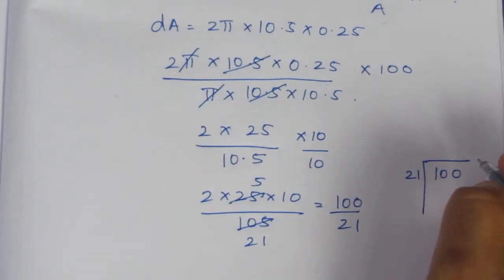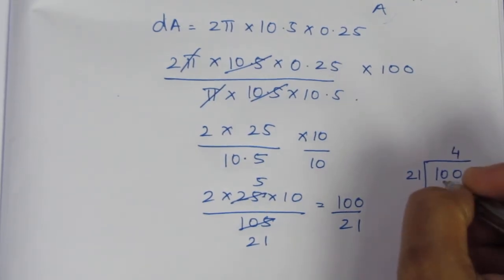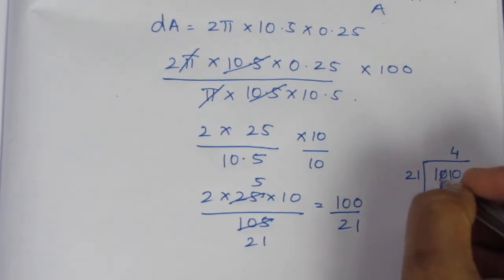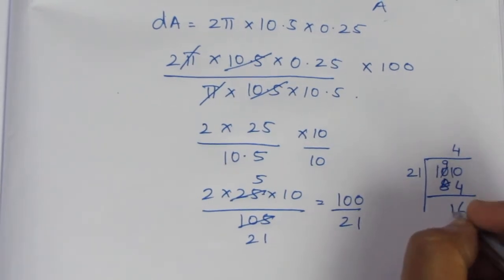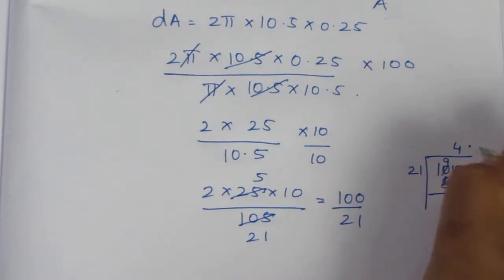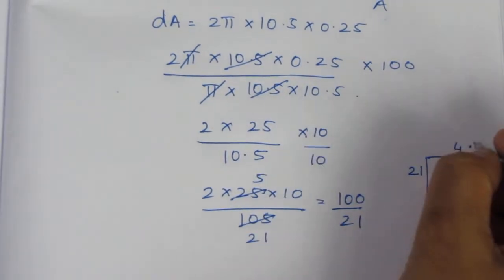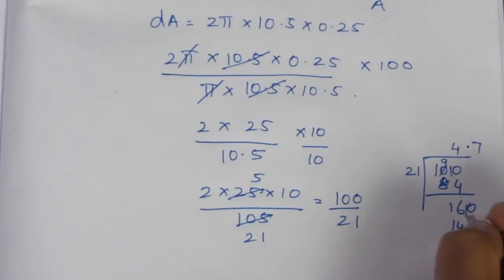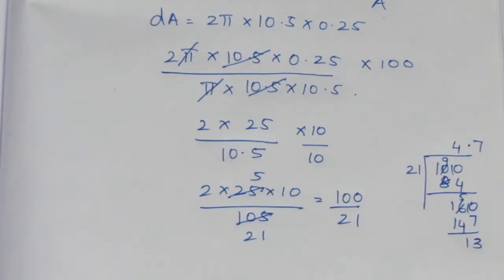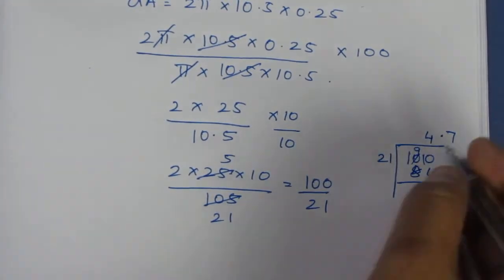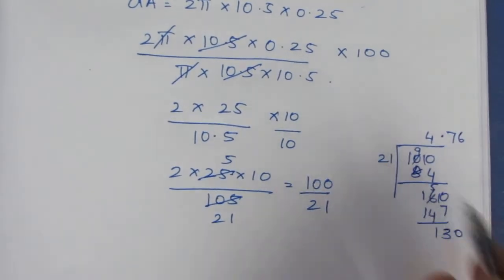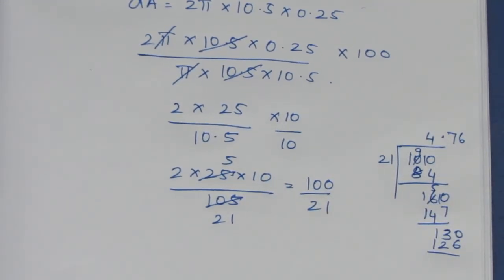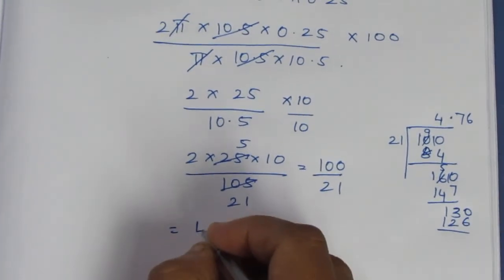So we have 100 by 21. Performing the division: 21 goes into 100 giving 4, remainder 16; 21 into 160 gives 7, remainder 13; continuing the division gives approximately 4.76. So the approximate percentage change in the area is 4.76%.